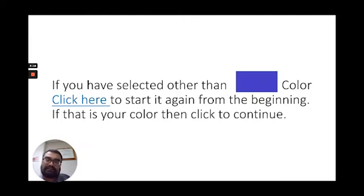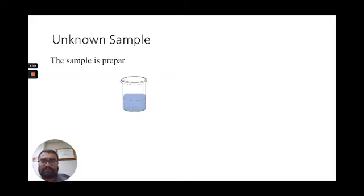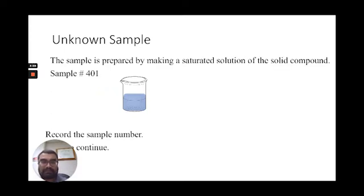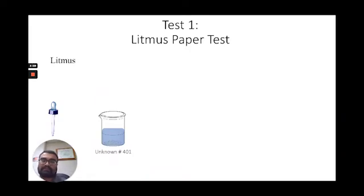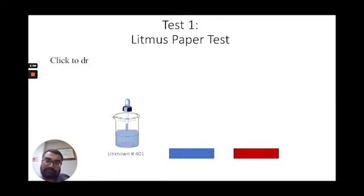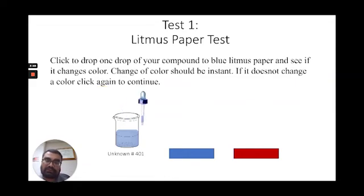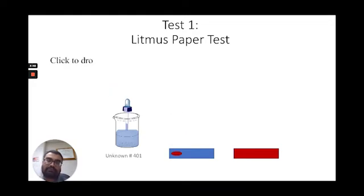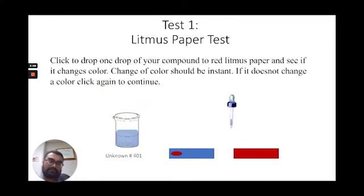I'll show some of the tests that have cool animations. First, they note down the sample number, then they perform the litmus paper test for an acidic compound. It talks a bit about the litmus paper test, and then they perform it by dropping a drop of their unknown solution onto blue litmus paper. The blue changed to red, so it is an acid. They also perform a cross-check with red litmus paper, which does not change color, confirming the compound is acidic.